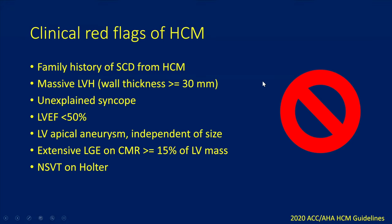From an echo perspective, it is important for us to quantify as accurately as possible the degree of wall thickening, perform very careful analysis of the ejection fraction, and consider using echo contrast to reveal apical aneurysm.